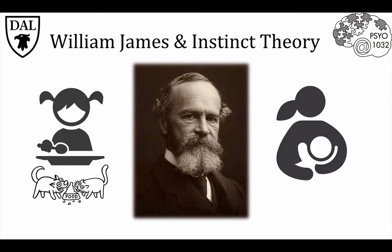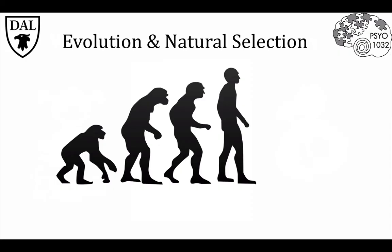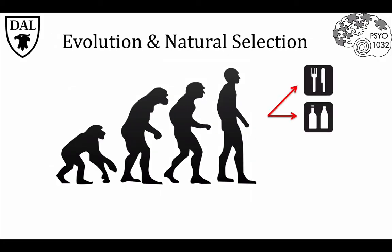James was strongly influenced by Charles Darwin's theory of evolution through natural selection. At the core of this is the idea that the purpose of any living organism is to perpetuate itself. You've likely heard the phrase 'survival of the fittest,' which is the cornerstone of Darwin's theory. From this perspective, fitness refers to the ability to survive and reproduce. Basic needs such as food, fluids, and optimal temperature are often explained from this perspective.